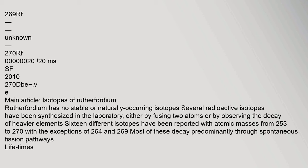Rutherfordium has no stable or naturally occurring isotopes. Several radioactive isotopes have been synthesized in the laboratory, either by fusing two atoms or by observing the decay of heavier elements. 16 different isotopes have been reported with atomic masses from 253 to 270, with the exceptions of 264 and 269. Most of these decay predominantly through spontaneous fission pathways.